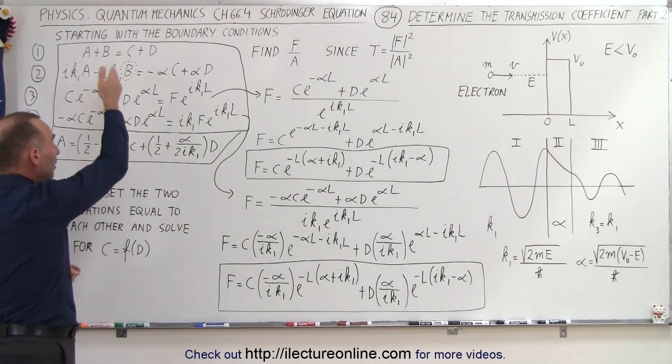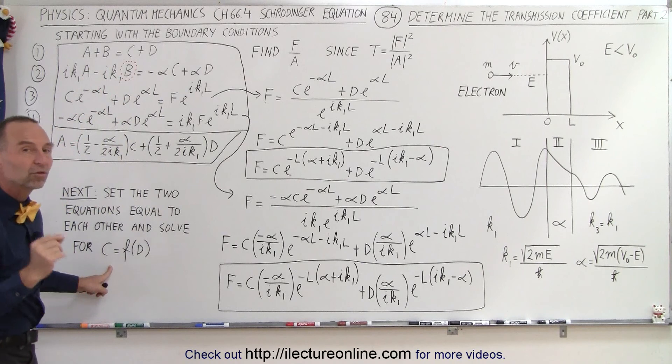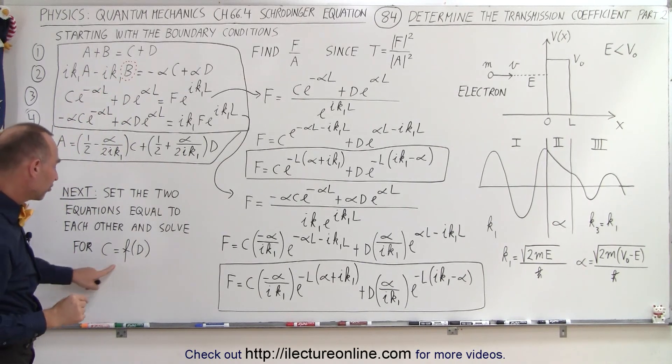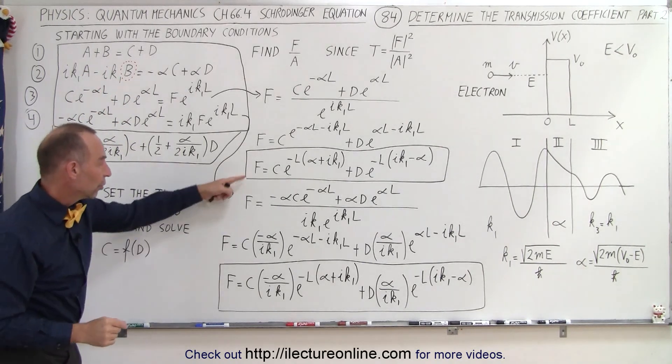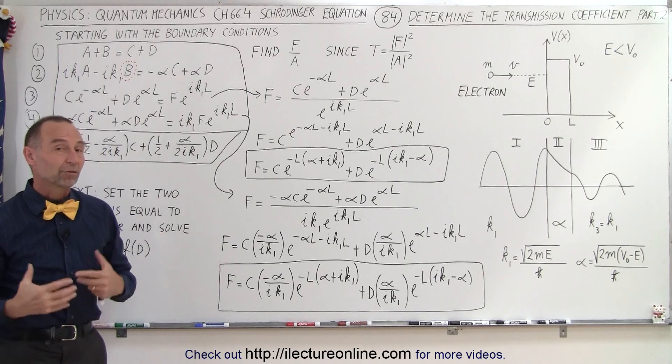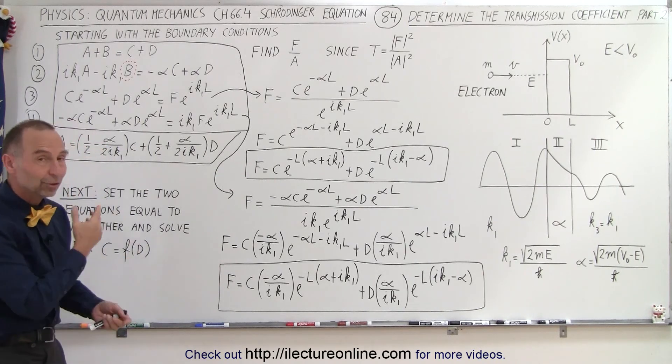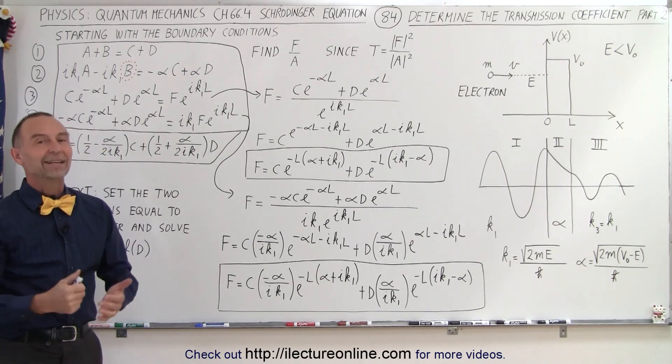So that's where we're trying to go, we've eliminated B already, the next thing we're going to do is try to eliminate C by solving for this, setting these two equations equal to each other. So if you need to know how to do this, stay tuned, and we'll continue this on the next video.